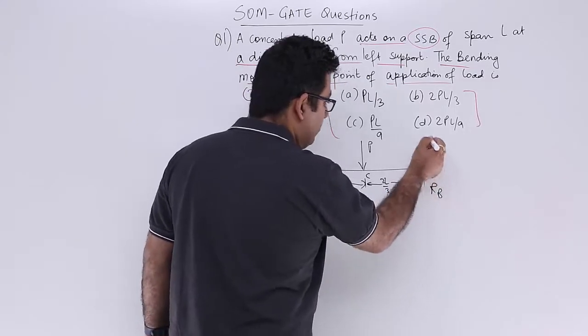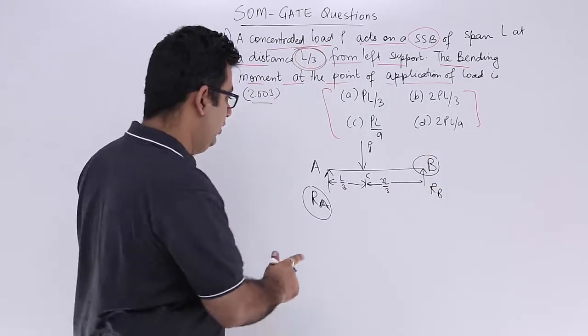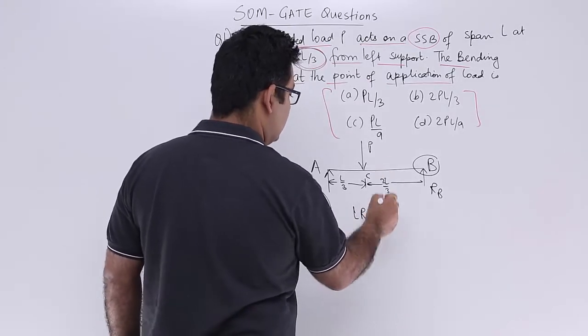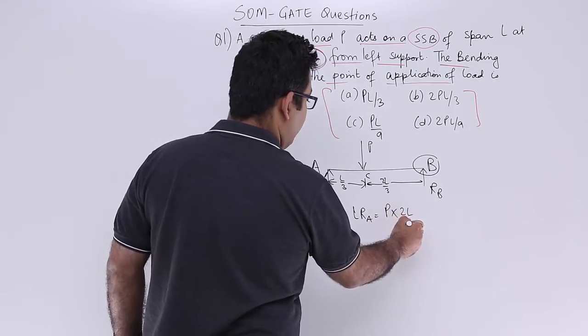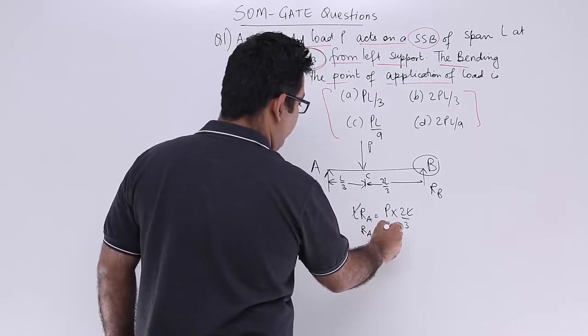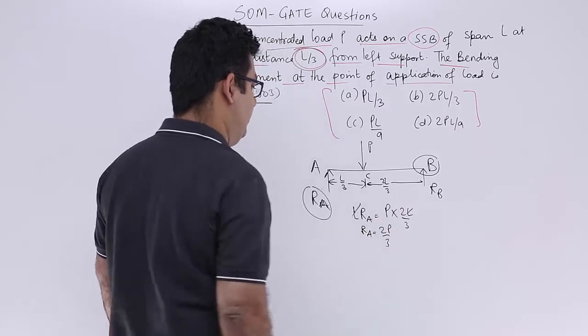So just find out one of these two and your work will be done. So let us find out RA and we will take moments about point B. So you will have L into RA, this is equal to P into 2L by 3. So RA is nothing but 2P by 3.